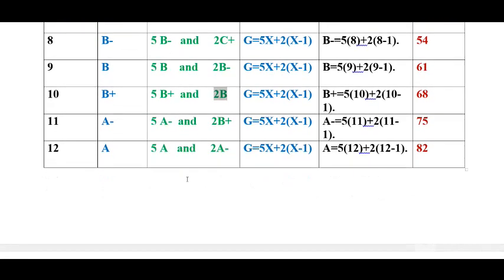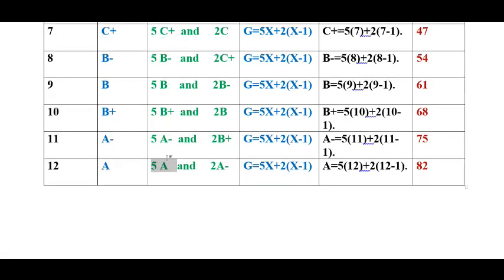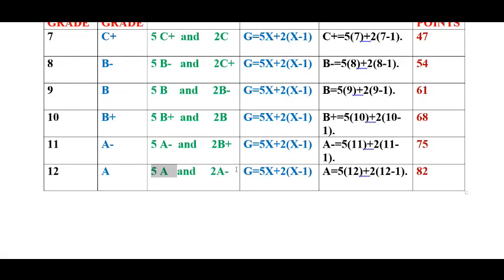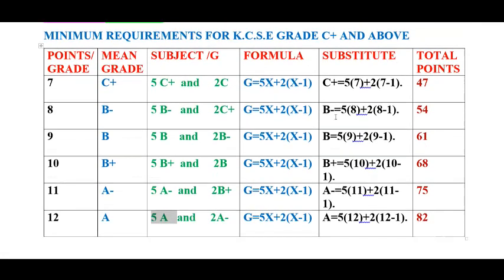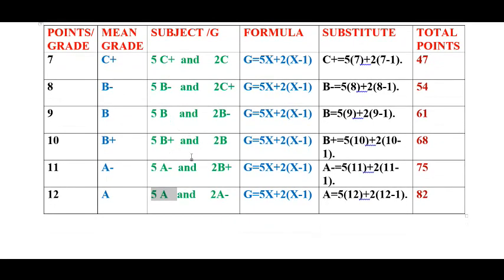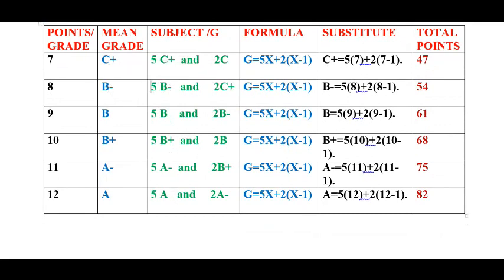For a student to get an A, you will have to score five A's in five subjects and then score two A minuses. As you can see, you will have 82 points. Please, it is important for you to balance your subjects as I have shown you. In the grade you want, make sure you score that grade in five subjects.